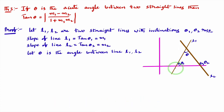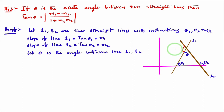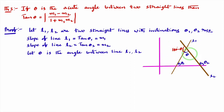When considering the angle between two lines, there are mainly two angles. This angle is theta, and the vertically opposite angle is also theta. The supplementary angle plus theta equals 180 degrees, so that angle is 180 degrees minus theta. Therefore, if theta is the angle between lines l1 and l2, then 180 degrees minus theta is also an angle between these two lines.